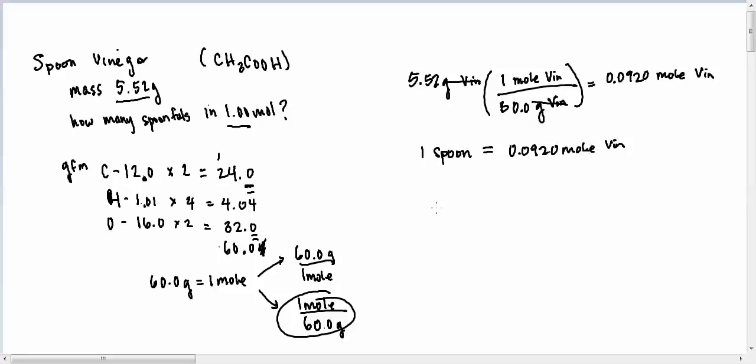So now I guess the question I want to ask is, in one mole of this stuff, how many spoonfuls do I have? So I can go like this: one mole of vinegar converted to spoonfuls, and I need a conversion factor for this. Again, you can take two fractions from this equal sign, and which one am I going to choose? I'm going to choose the one with moles on the bottom, so I have 0.0920 moles of vinegar, and that is equivalent to one spoonful of vinegar.